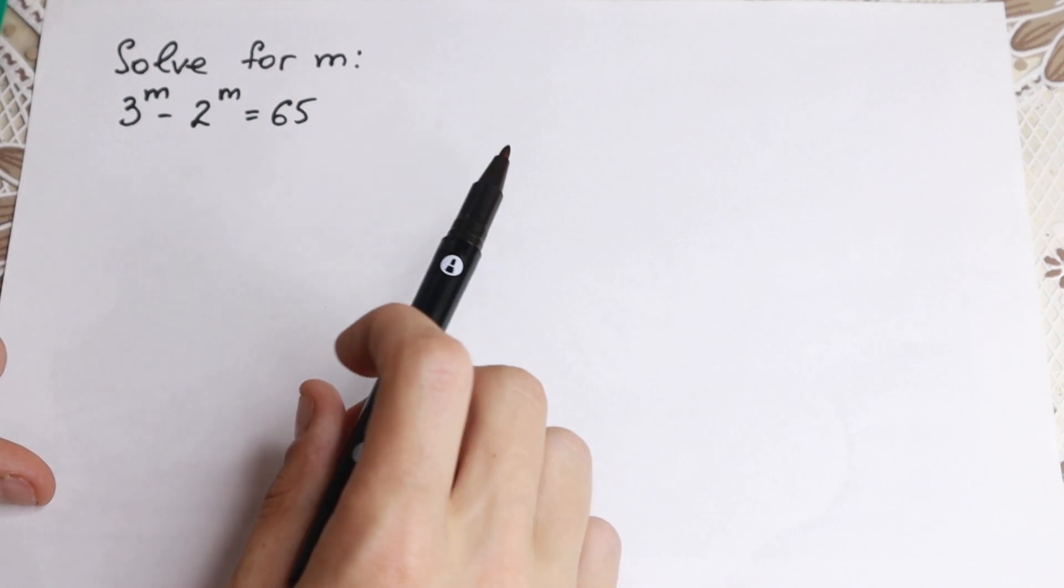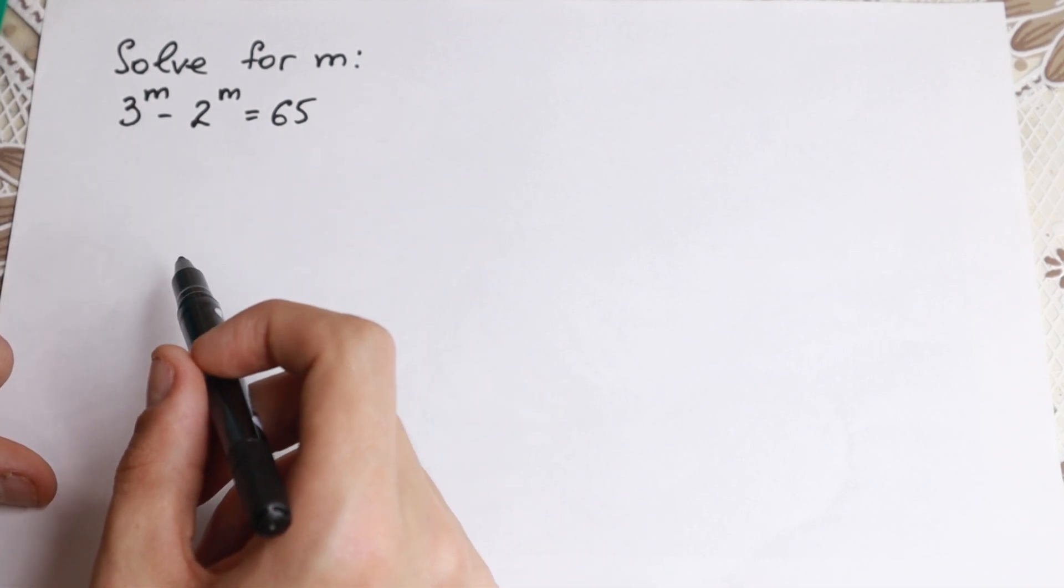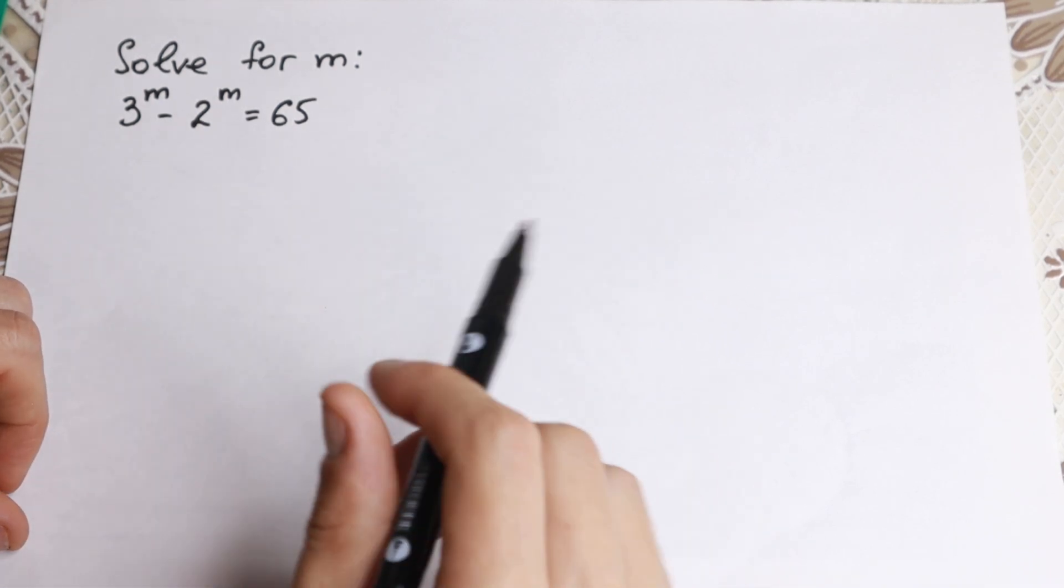At first glance we might use log on both sides, because we have m as the exponent. It looks like using log would be good for us. But I want to show you a really interesting other method, another tricky method for how we can solve it.